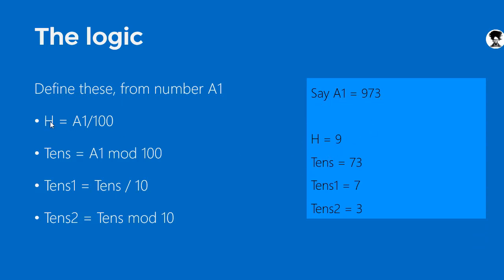For example, if the number in A1 is 973: H would be 9, because 973 divided by 100 is 9 (ignoring the decimal). Tens would be 73, because the remainder after dividing by 100 is 73. Tens1 is 73 divided by 10, which is 7. Tens2 is 73 modulus 10, which is 3. So H, Tens1, and Tens2 are the three individual digits, and Tens is the last two digits combined.